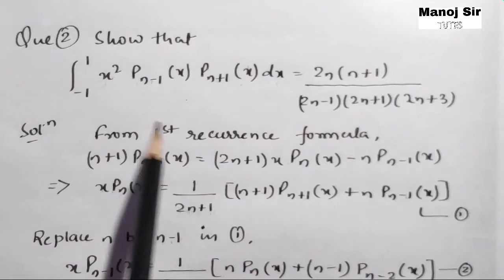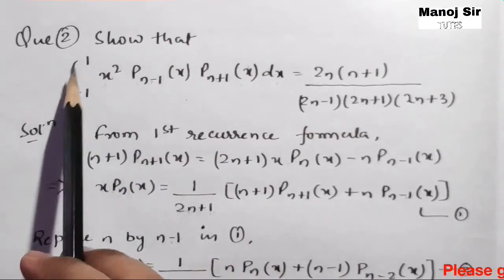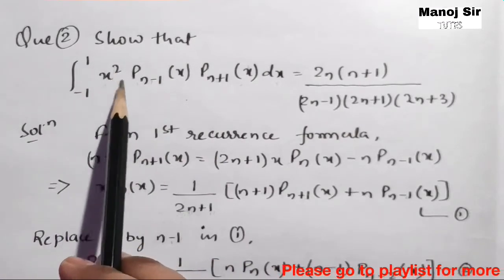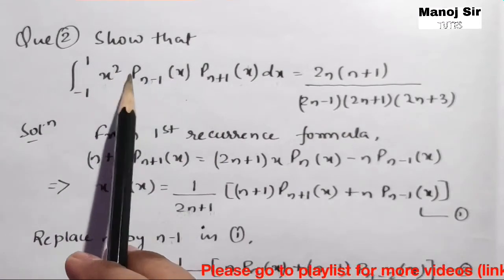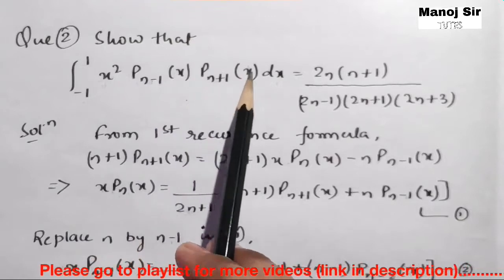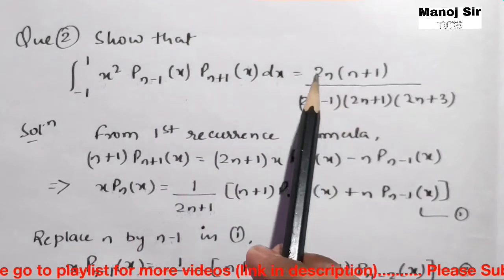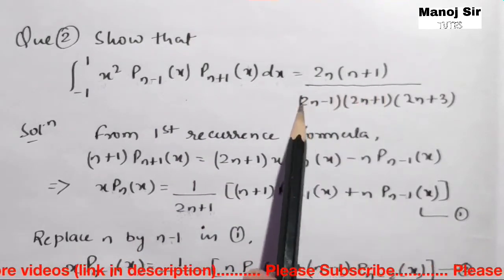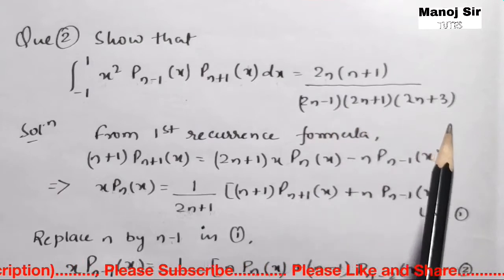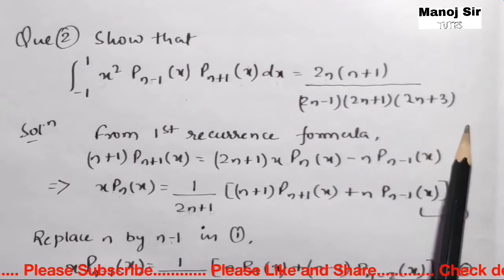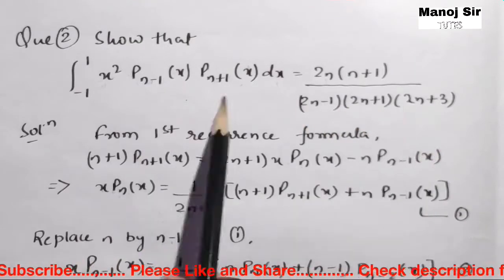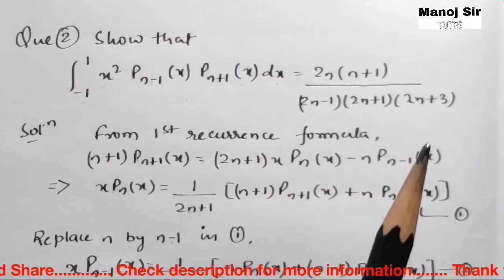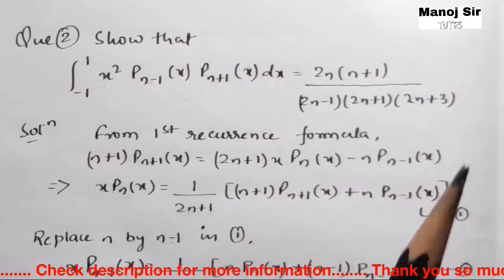Let us start with this problem: show that the integration from minus 1 to plus 1 of x squared times P_{n-1}(x) times P_{n+1}(x) dx equals 2n(n+1) divided by (2n-1)(2n+1)(2n+3). We need to prove this.